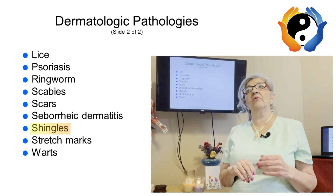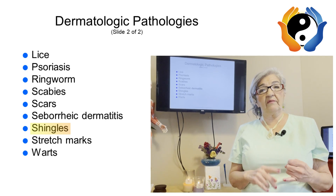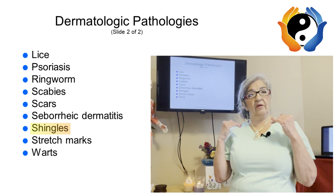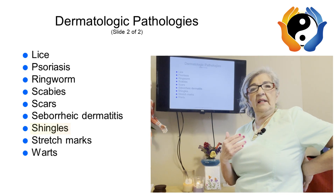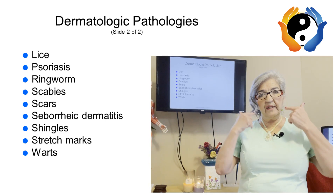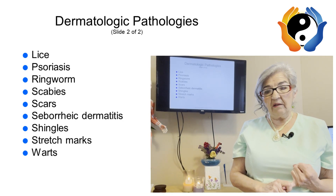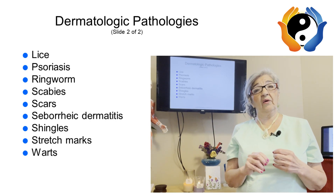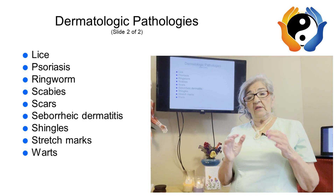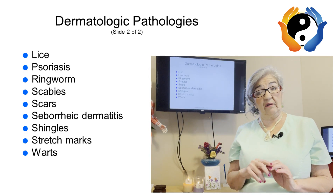Shingles is a localized infection — it's a virus, actually a reactivation of the chicken pox. It usually goes along a certain nerve, mainly on one side, commonly in the thoracic area or affecting the facial nerve. It runs lengthwise along where the nerve is and is very painful. Since it is a virus and can involve open sores, it can be contagious, so you need to be very careful with a client who has or has had shingles.